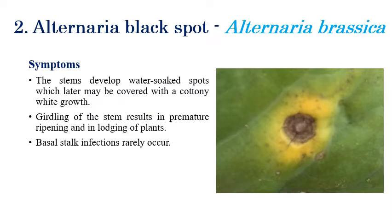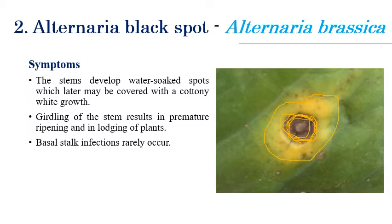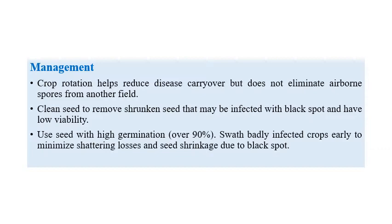The second disease is Alternaria black spot, caused by Alternaria brassica. On the leaf surface we can see brown color discolorations covered with yellow color halos. Brown color spots on leaves are covered by yellow color discolorations. On stems we can see water-soaked spots which may be covered with cottony growth. Mostly we can see concentric rings, which is a characteristic symptom.